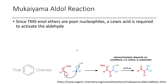Let's talk about the Mukaiyama aldol reaction. If you don't want to activate and remake a lithium enolate with methyl lithium or some activator such as fluoride, it's possible to use a Lewis acid to activate the aldehyde. The TMS enol ether is able to attack the aldehyde due to the catalysis afforded by the Lewis acid, and upon workup, this will be converted to the beta-hydroxy ketone.